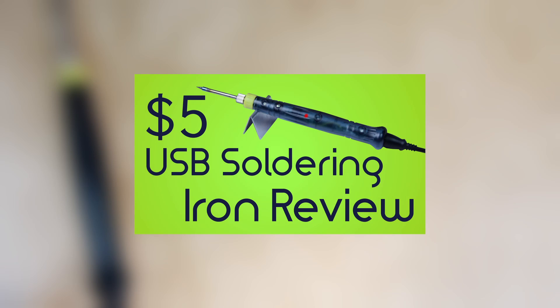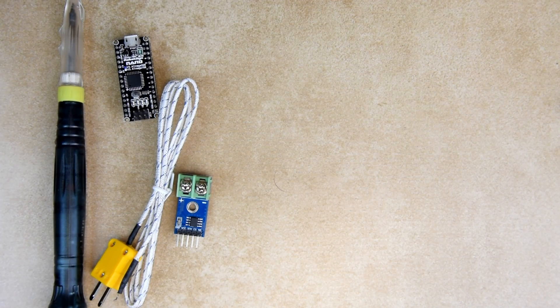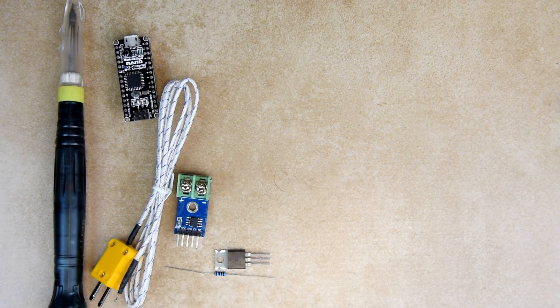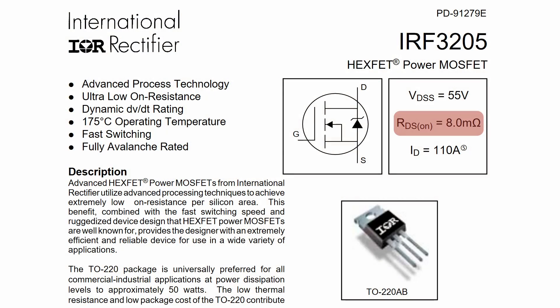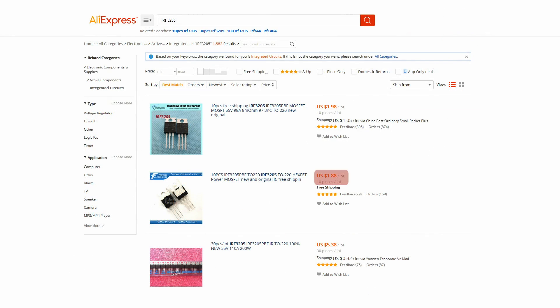Here is what we'll need. First of all, the soldering iron I reviewed in my last video. Click now if you haven't seen it. Second, an Arduino Nano. Next, a thermocouple with the MAX 6675 based converter board. A MOSFET. I am using the IRF3205 because of the low resistance and very low price, around 20 cents apiece from China.